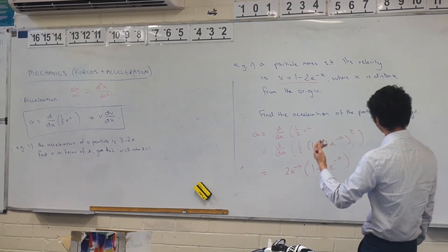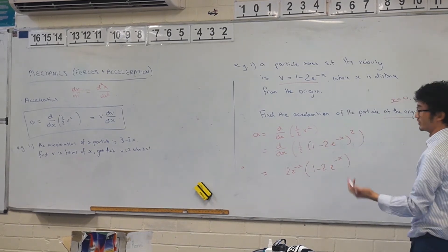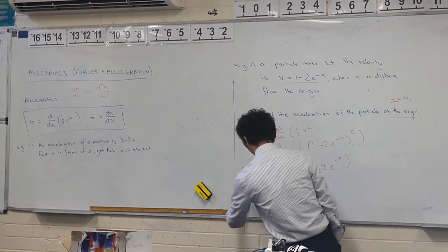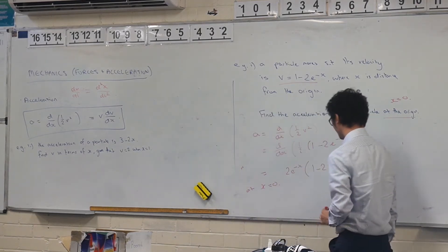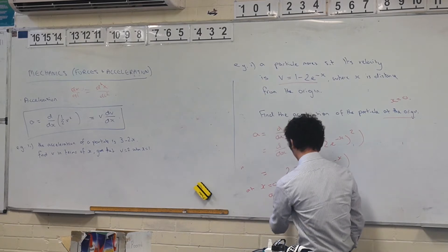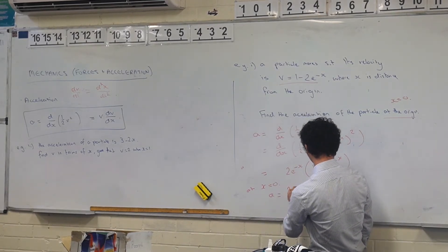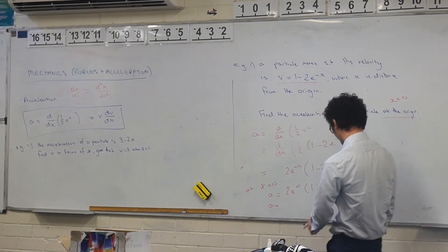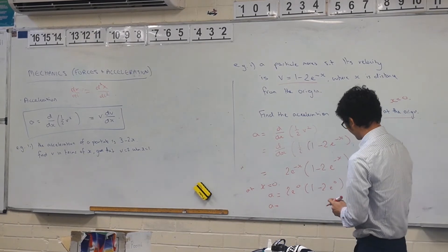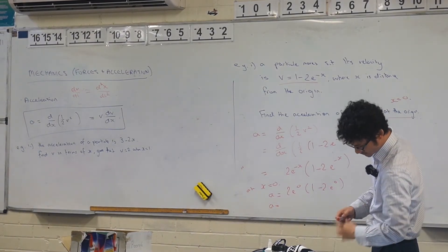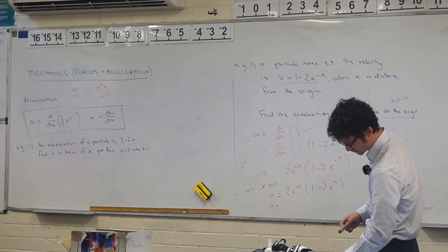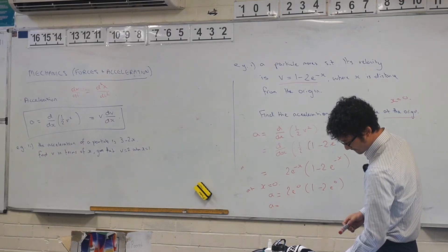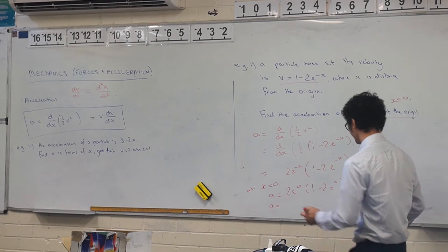But we haven't answered the question yet — we want to find the acceleration of the particle at the origin. So at x is equal to 0, we get a is equal to 2e to the 0, times 1 minus 2e to the 0. That's just going to be 1, and this is also going to be 1. So the answer is negative 2.